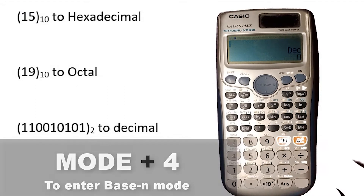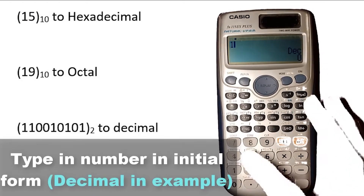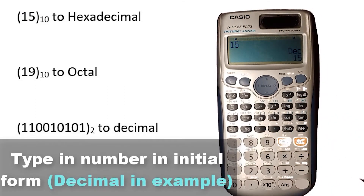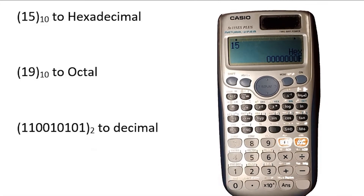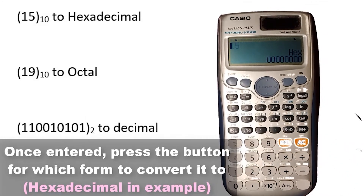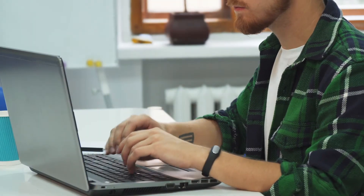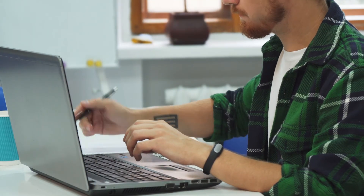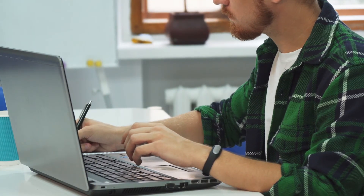If it takes you three minutes to solve a question by hand and the calculator can help you do the same calculation within 30 seconds, you are saving yourself two and a half minutes. And if there are 10 such problems where you save time, you are essentially giving yourself 25 extra minutes on the exam — which is a big deal, because with those 25 extra minutes you can then take a shot at questions that are potentially out of your league.